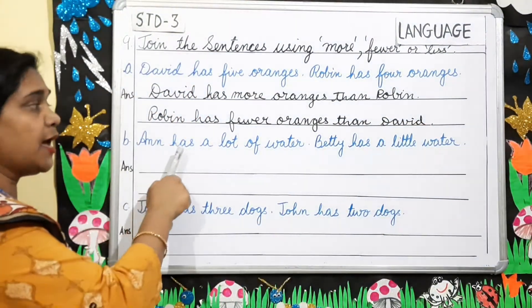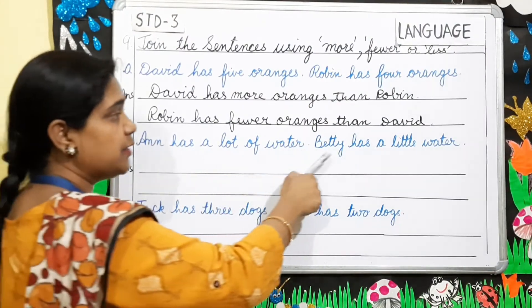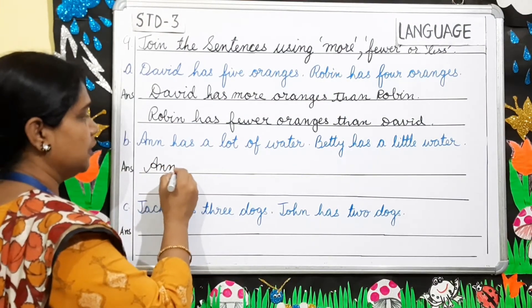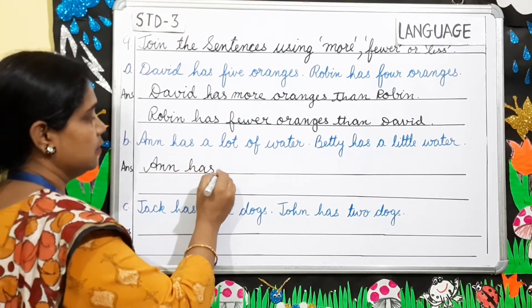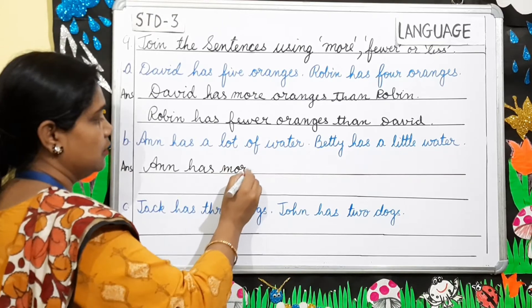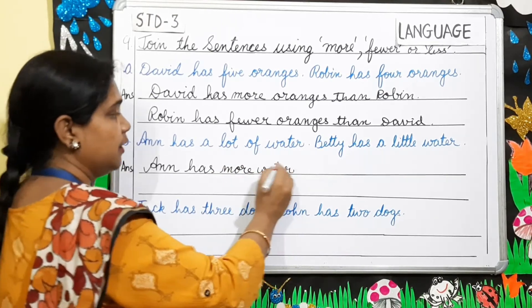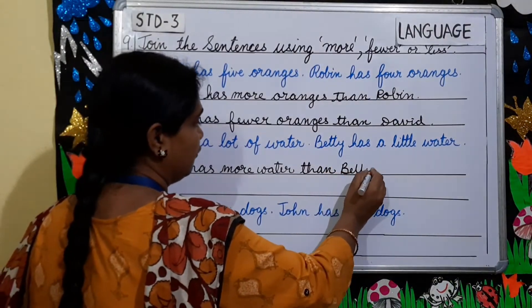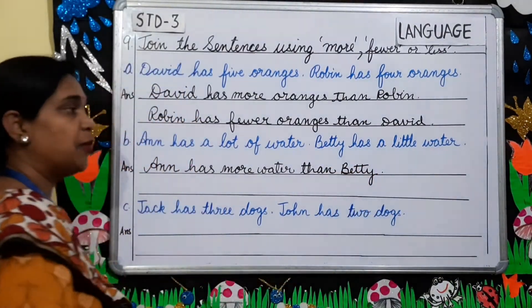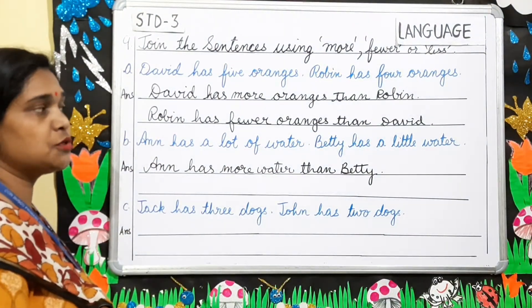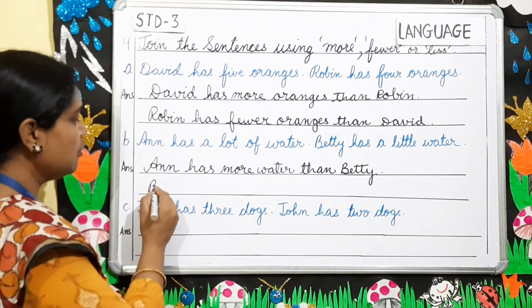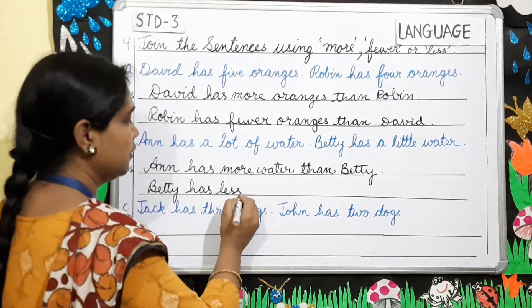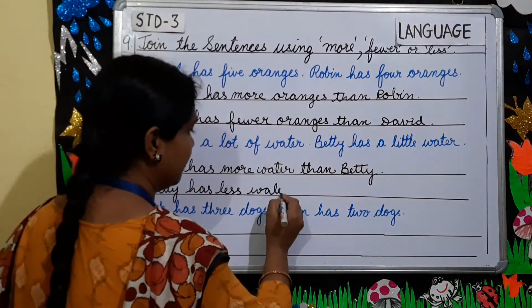Number B: Anne has a lot of water. Betty has a little water. Anne has more water than Betty. And for Betty — because water you cannot count, so you will make use of 'less': Betty has less water than Anne.